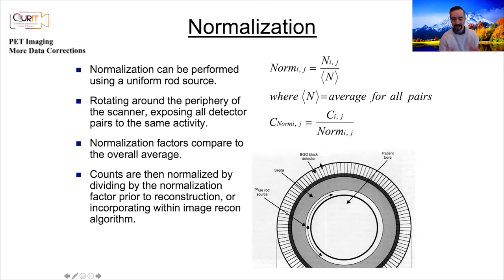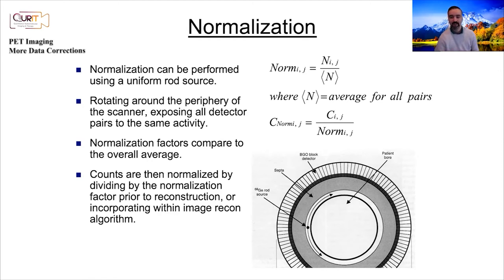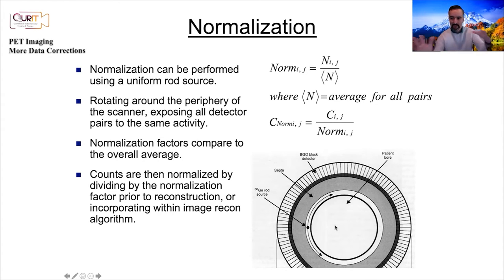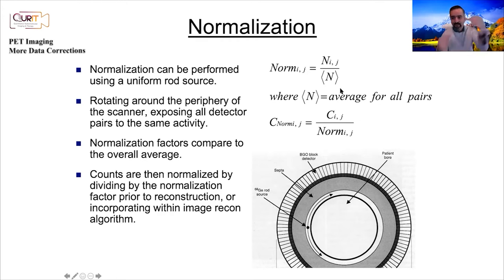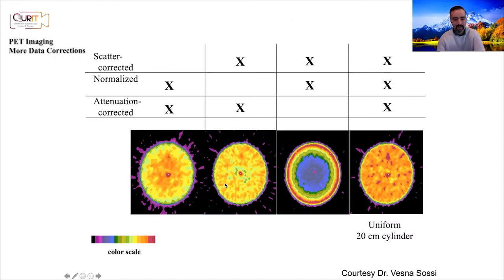Increasingly, people also incorporate normalization into iterative image reconstruction rather than pre-correcting the data. It used to require a very long scan, but more sophisticated so-called component-based normalization approaches use more mathematics and geometric modeling, requiring fewer counts to perform the calculations. The essence remains the same: a rotating rod source covers all lines of response and you estimate the effective sensitivity and normalization factors.